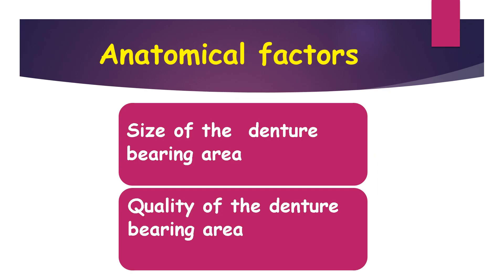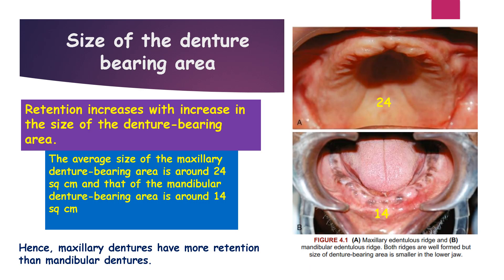Coming to the anatomical factors, the main anatomic factors are the size of the denture bearing area and the quality of the denture bearing area. Retention increases with increase in the size of the denture bearing area. This picture shows the average size of the maxillary denture bearing area is around 24 square centimeters and that of the mandibular denture bearing area is around 14 square centimeters.